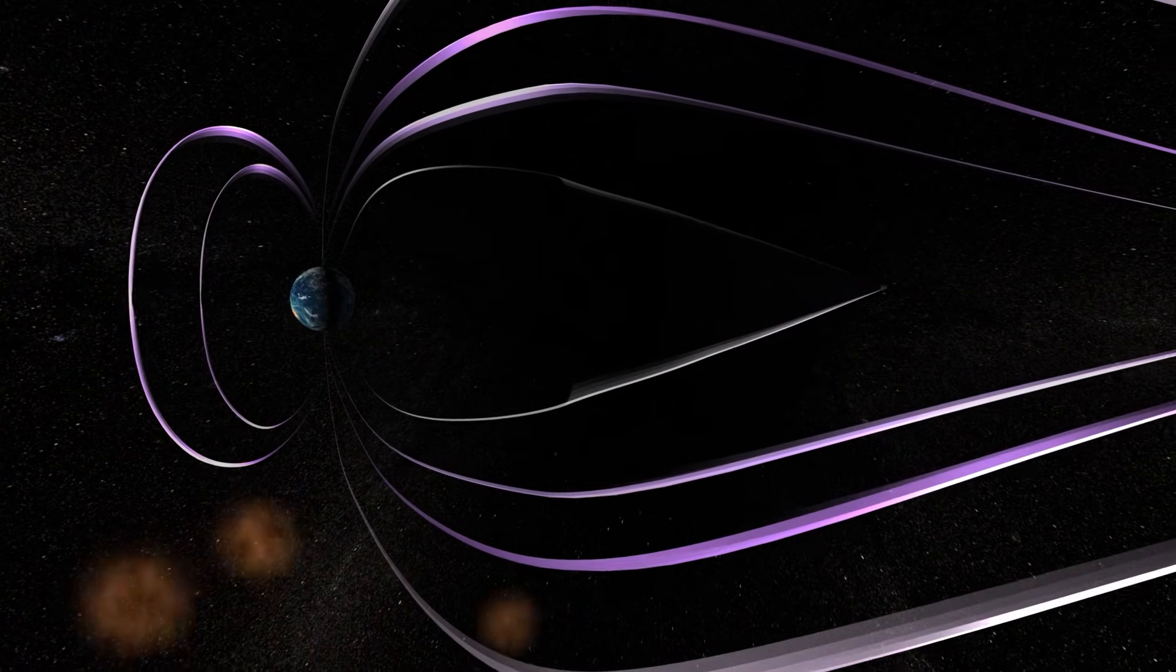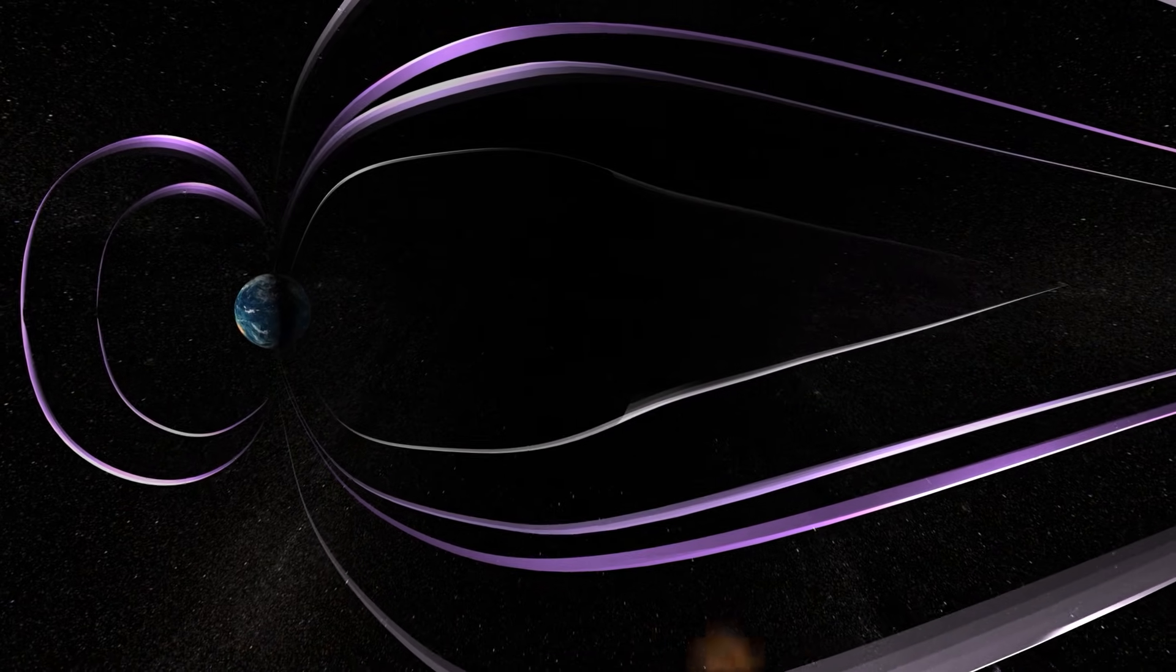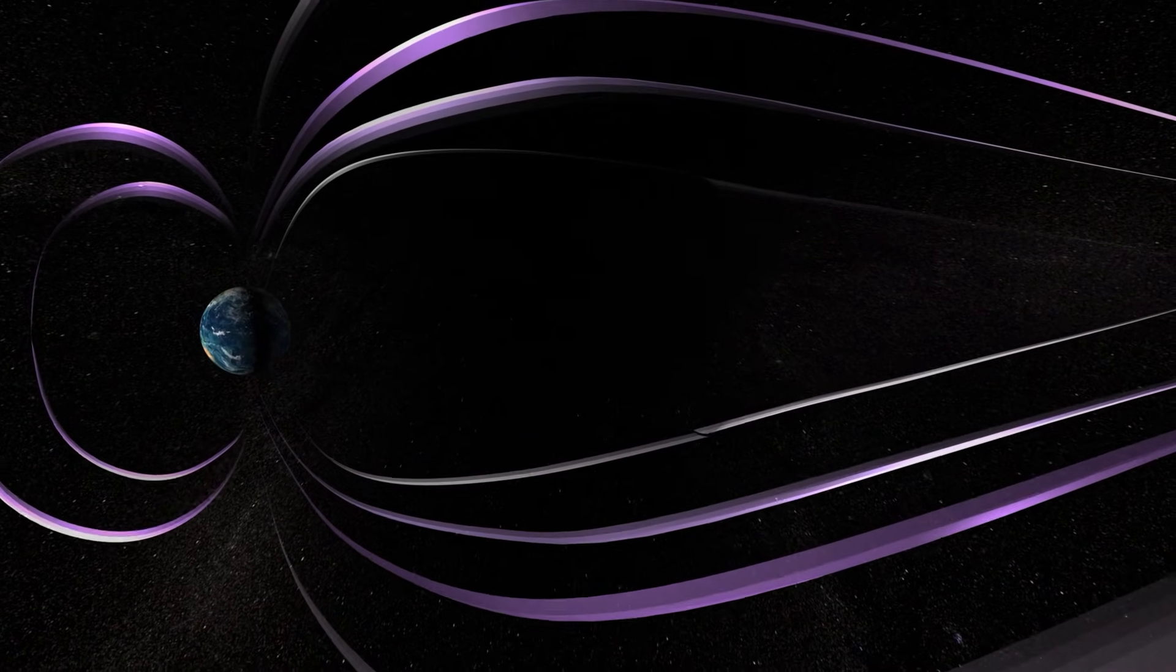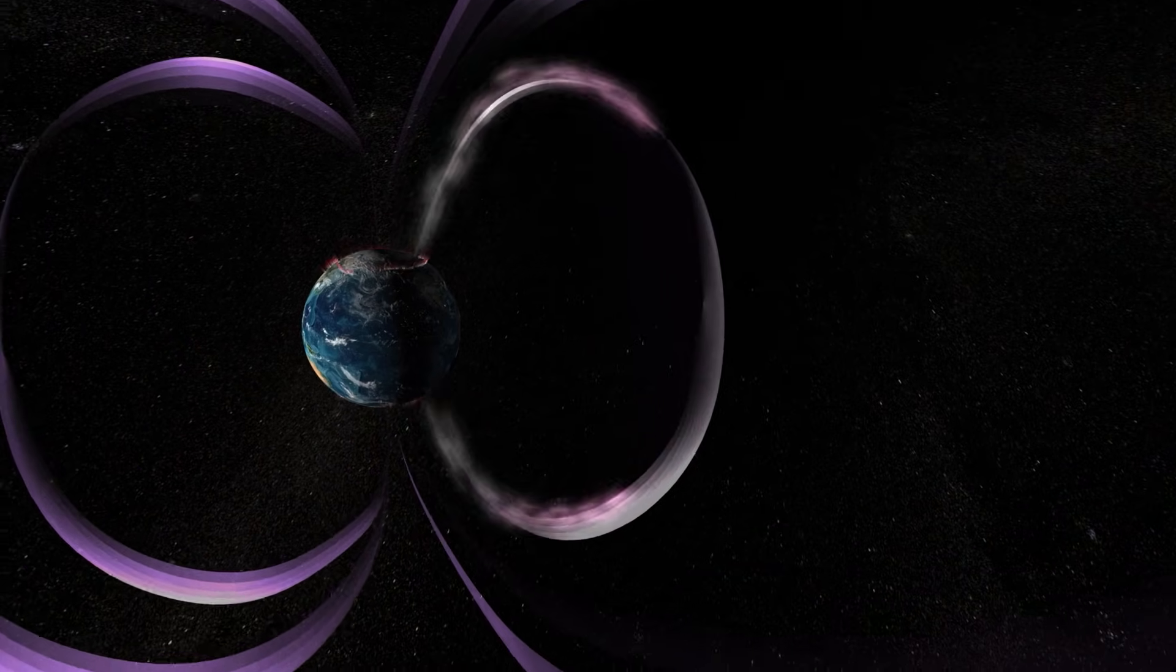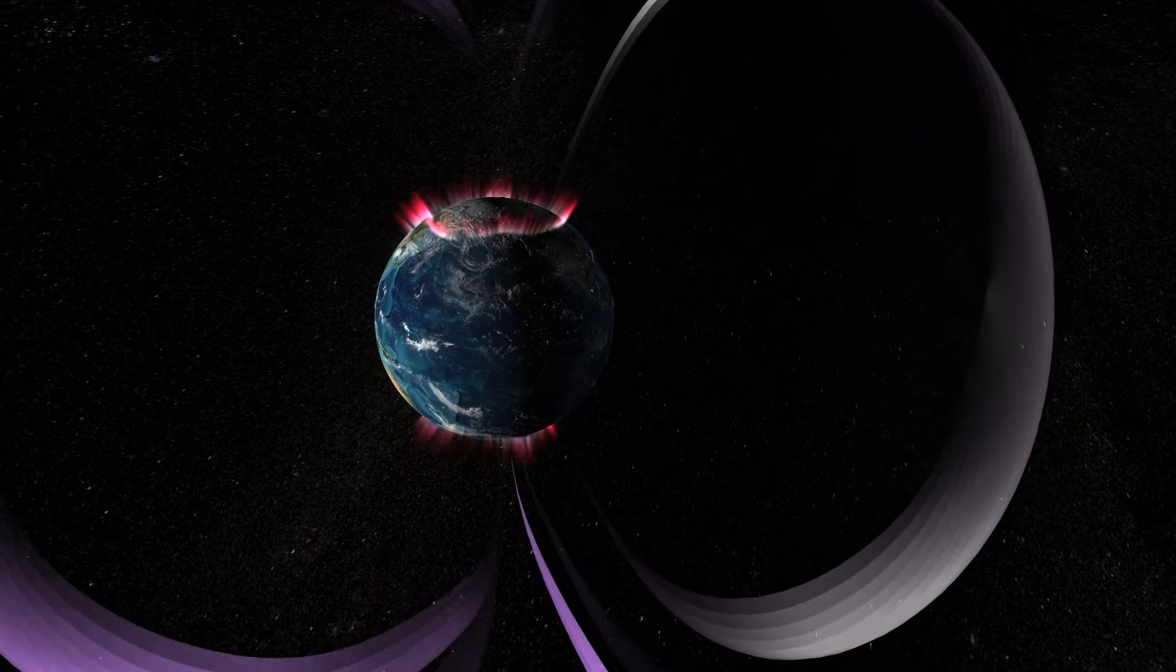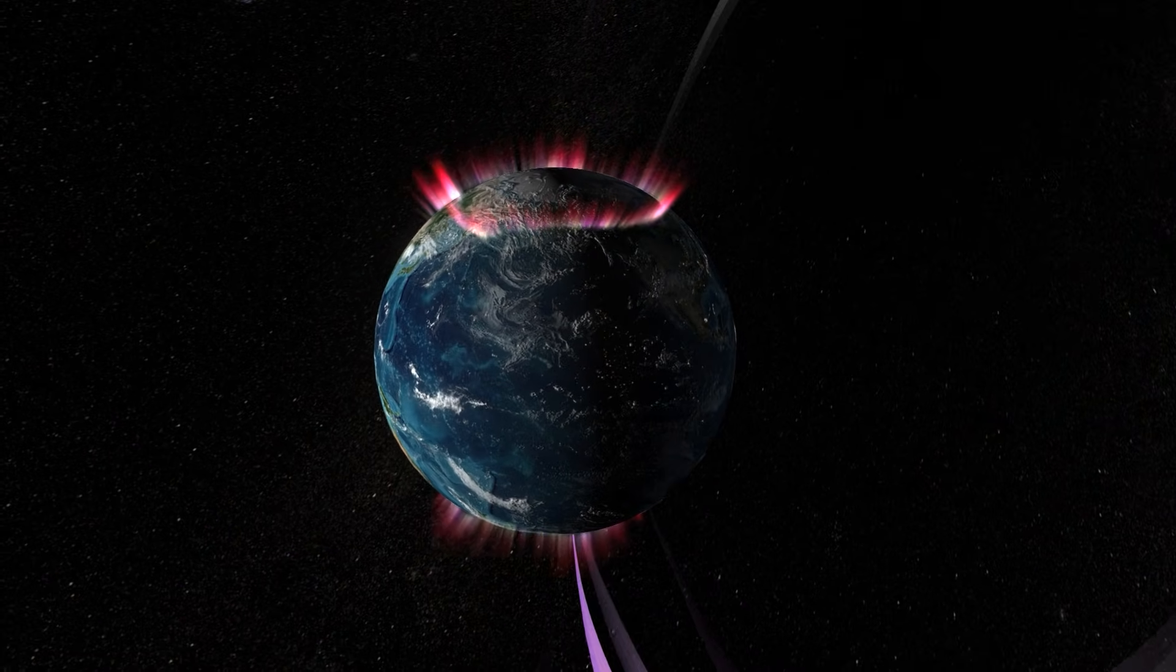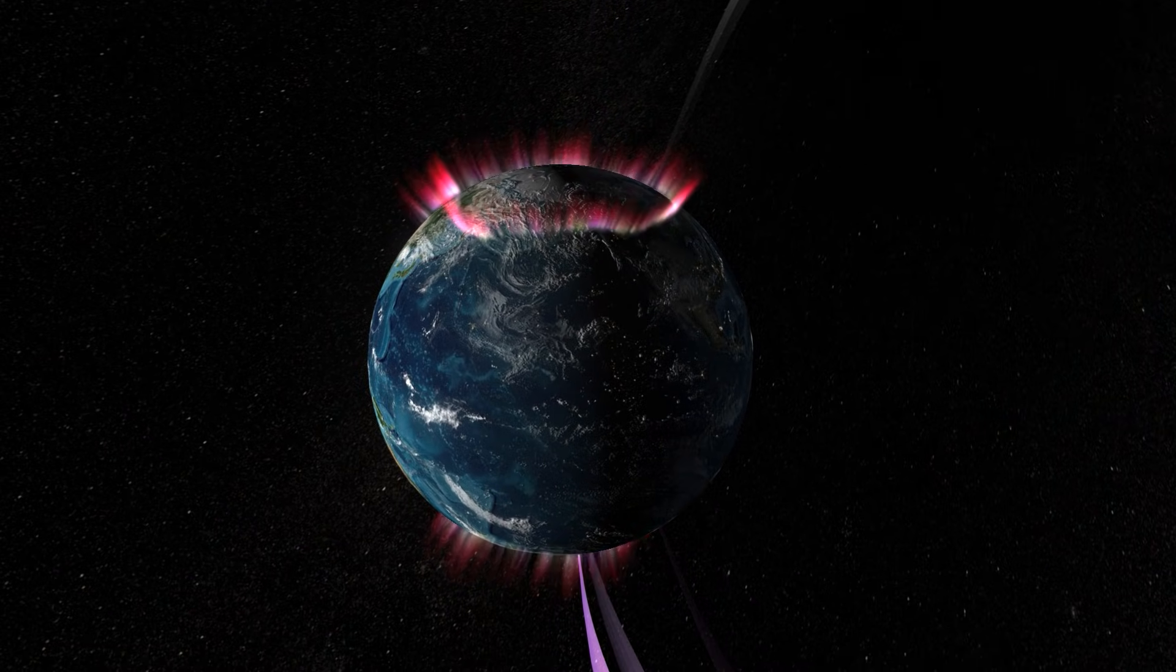Eight minutes after ejection from the sun, these charged particles begin to interact with the magnetosphere, influencing and following the field lines down to the poles of the planet. When this happens, we see the aurora borealis and the aurora australis for the north and south poles respectively.